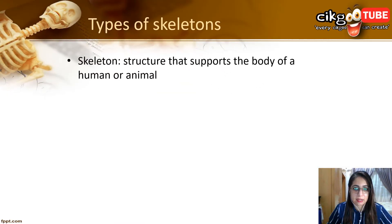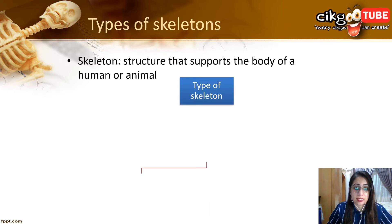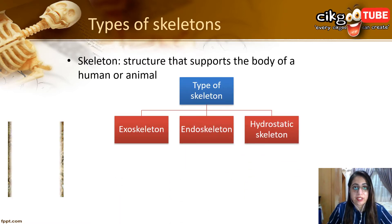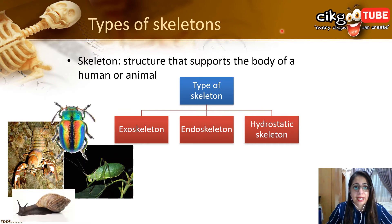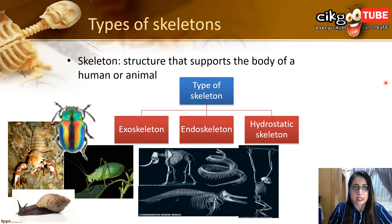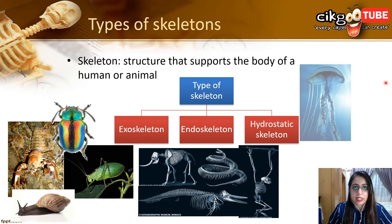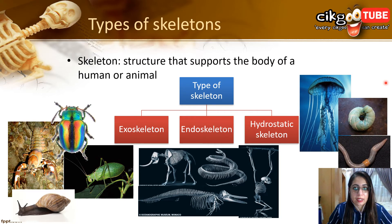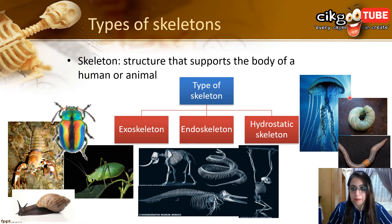A skeleton is a structure that supports the body of a human or animal. There are three types of skeleton. First, exoskeleton — examples include insects and mollusks like seashells and oysters, with the skeleton located outside the body. Second, endoskeleton — found in all vertebrates, with the skeleton inside the body. Third, hydrostatic skeleton — which depends on hydrostatic pressure from fluid, found in animals like earthworms, jellyfish, and caterpillars.